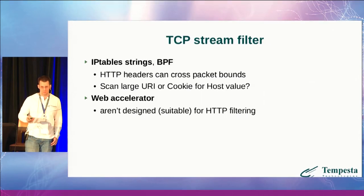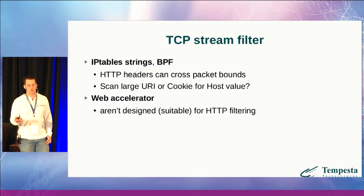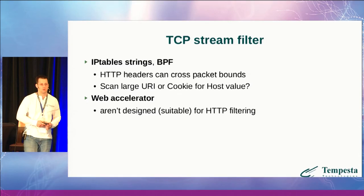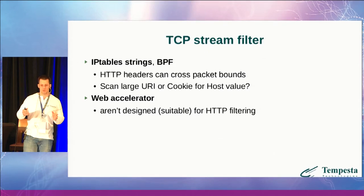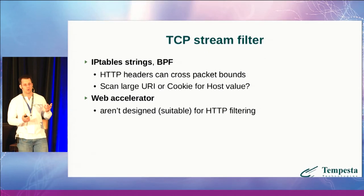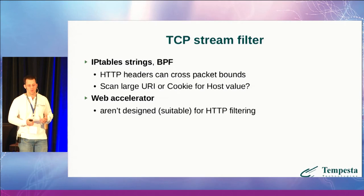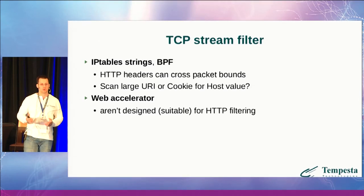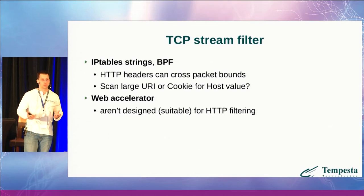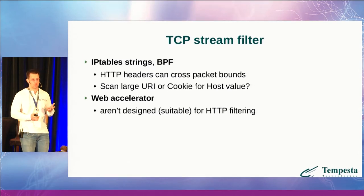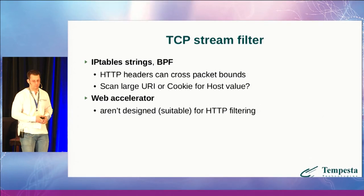How do we scan encrypted traffic for such attacks? Sometimes we use iptables or BPF. However, the problem with this approach is that the header can cross packet boundaries, and low-level tools like BPF or iptables can only work within a single packet. The second thing is that we have to scan all the data, including possibly large URIs or cookies, because we don't know where exactly we must search for the signature. If you have tons of such signatures, the problem becomes more significant.